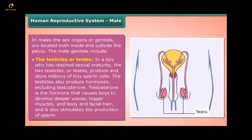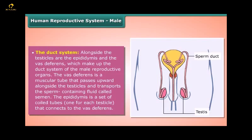Testosterone is the hormone that causes boys to develop deeper voices, bigger muscles, and body and facial hair. It also stimulates the production of sperm. The duct system, alongside the testicles, includes the epididymis and the vas deferens, which make up the duct system of the male reproductive organs.